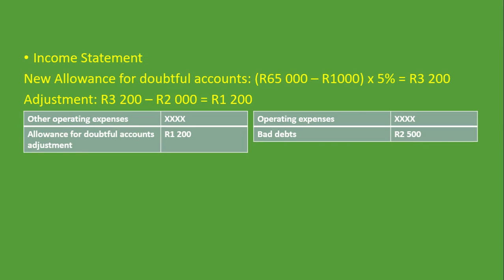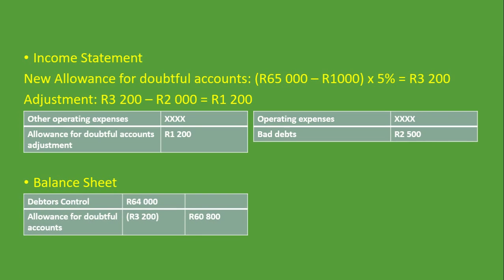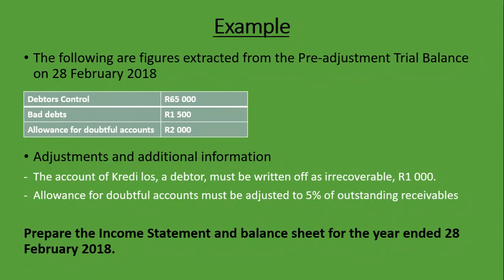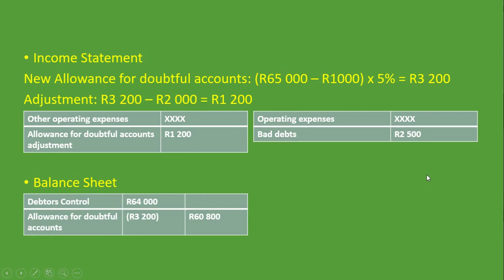Now let's see how we record these accounts in the Balance Sheet. Remember: you record Debtors Control minus the new Bad Debt minus the new Allowance for Doubtful Accounts. We have R64,000 for Debtors Control, which we got by taking the Debtors Control of R65,000 minus only the new Bad Debt from Additional Information of R1,000. We do not deduct the Bad Debt from the Pre-Adjustment Trial Balance because we assume that one has already been deducted in the Debtors Control.